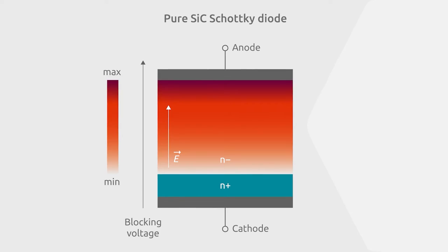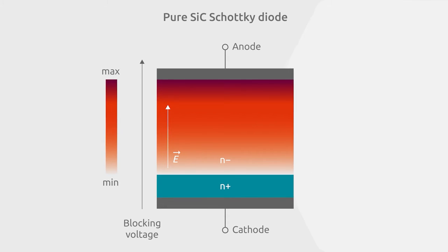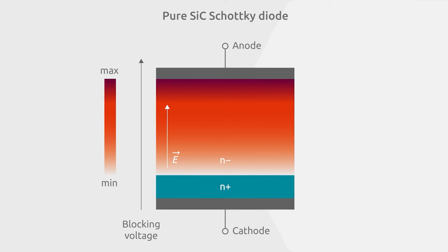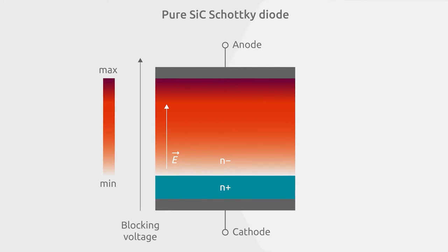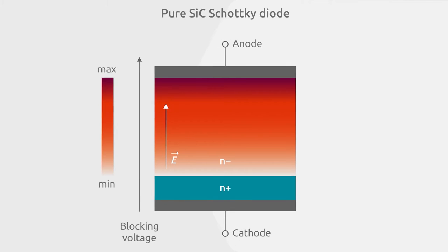A Schottky diode's leakage current can theoretically be improved by introducing a thicker drift layer. This would lower the electric field strength during blocking operation, but would add to the drift resistance, which is a disadvantage in power applications.